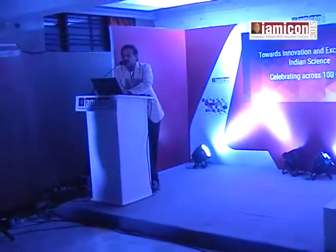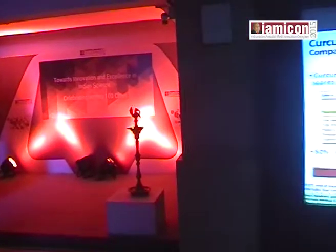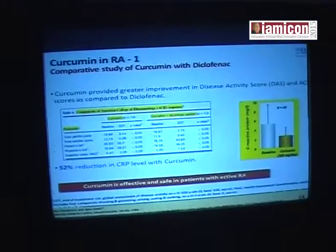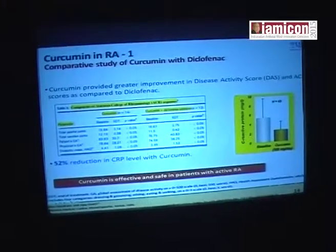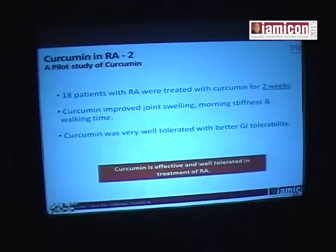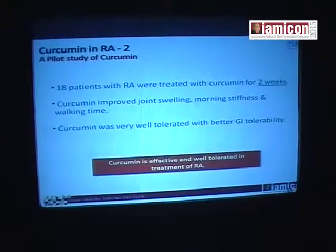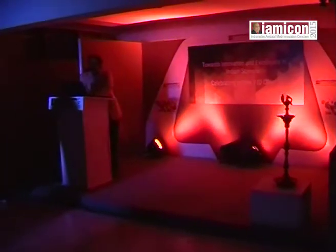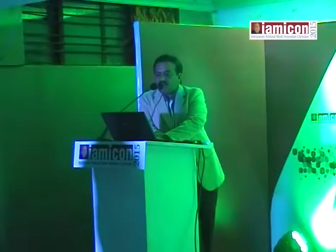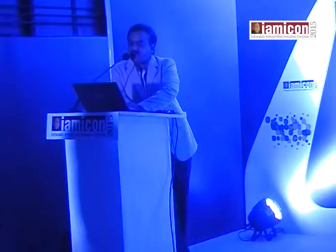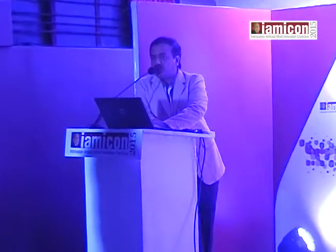A comparative study of curcumin with diclofenac was done. Curcumin provided greater improvement in disease activity scores and ACR scores compared to diclofenac, with a 52% reduction in CRP levels. Curcumin is effective and safe in patients with active rheumatoid arthritis. In another study, 18 patients with RA were treated with curcumin for 2 weeks; curcumin improved joint swelling, morning stiffness, and walking time, and was very well tolerated with better GI tolerability.